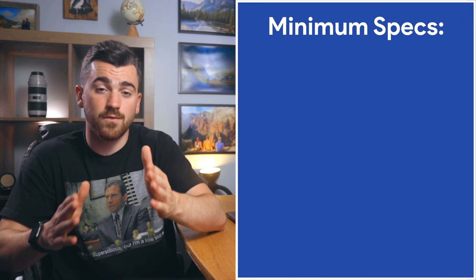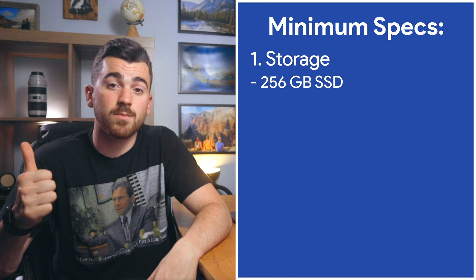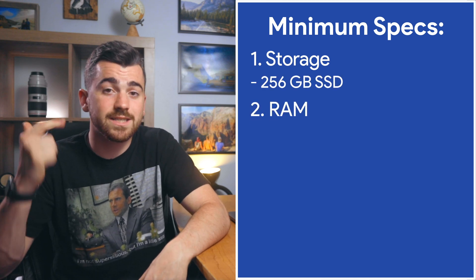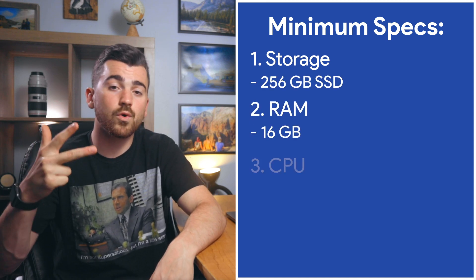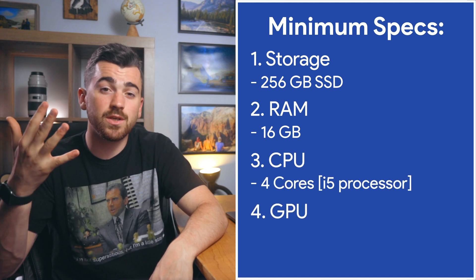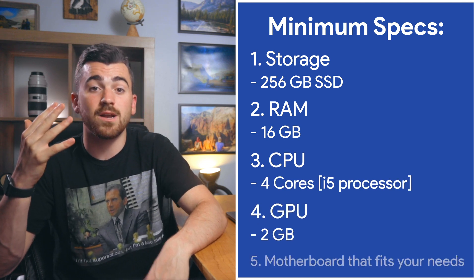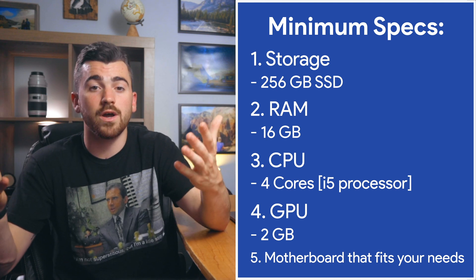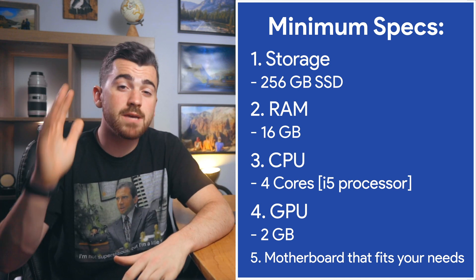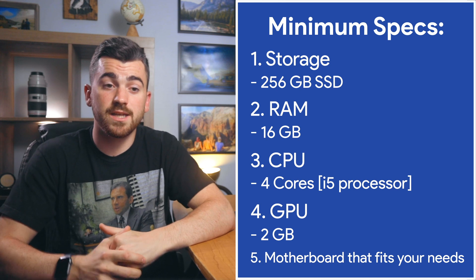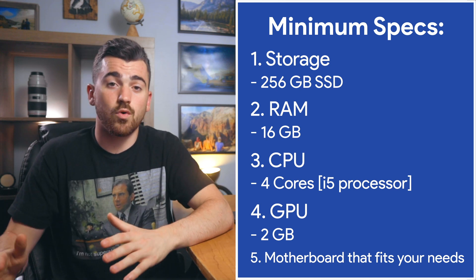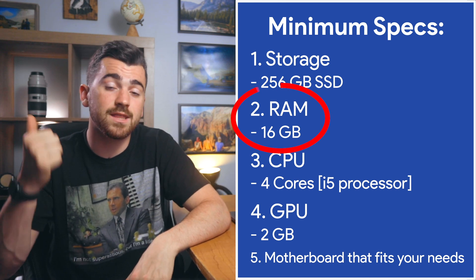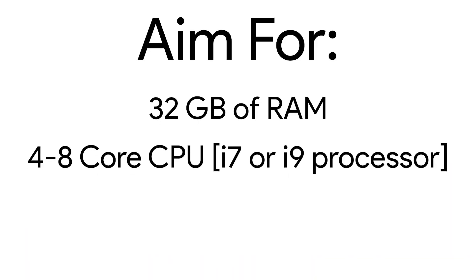To summarize, my minimum recommendations for computer specs would be the following: 256 gigabytes of solid state storage, 16 gigabytes of RAM, a four core CPU with an i5 processor, a GPU with at least two gigabytes of RAM, and a motherboard that aligns with what you want out of your computer. That's the minimum recommendation. If you do have more money to spend and you're looking at which areas to upgrade, I would say focus on the RAM and the CPU — aim for 32 gigabytes of RAM and a four to eight core CPU with an i7 or an i9 processor.